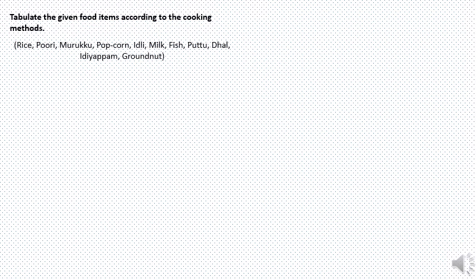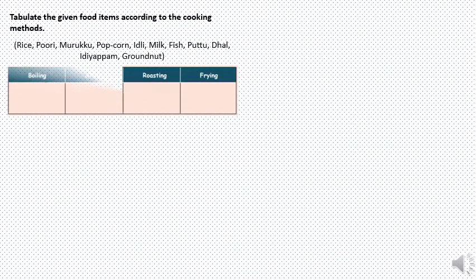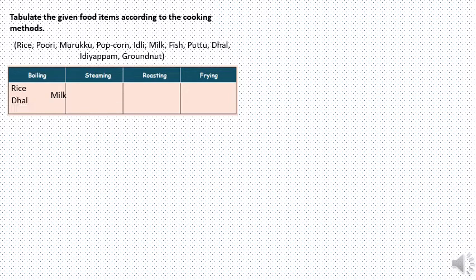Tabulate the given food items according to the cooking methods. We have a lot of items here which we need to categorize into boiling, steaming, roasting and frying. Boiling: rice, dal, milk. Steaming: idli, puttu, idiyappam. Roasting: groundnut, popcorn. Frying: puri, murukku, fish.